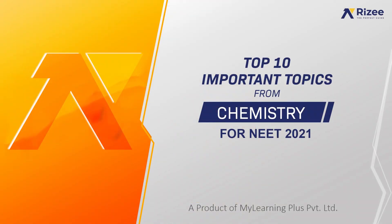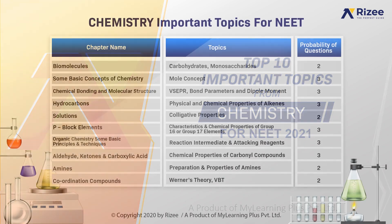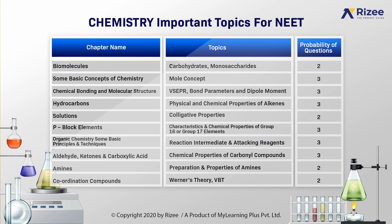Top 10 important topics from chemistry for NEET 2021. In the chapter of biomolecules, important topic is carbohydrates and monosaccharides. Probability of questions asked are 2. In some basic concepts of chemistry, important topic is mole concept. Probability of questions asked are 3. In chapter chemical bonding and molecular structure, important topics are VSEPR, bond parameters and dipole moment. Probability of questions asked are 3. In the chapter hydrocarbons, the important topics are physical and chemical properties of alkenes. Probability of questions asked are 3. And in chapter solutions, important topic is colligative properties. Probability of questions asked are 2. In P-block elements, the important topics are characteristics and chemical properties of group 16 or group 17 elements. Probability of questions asked are 3.